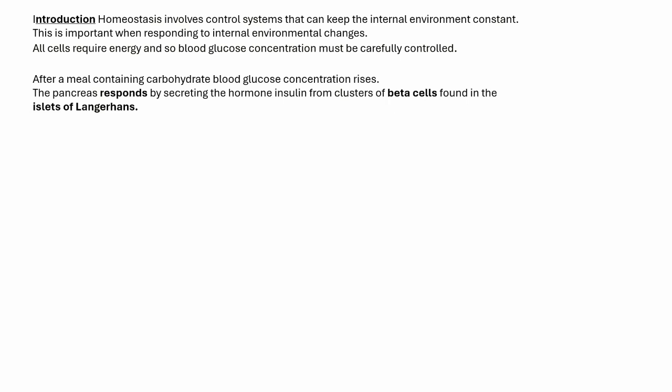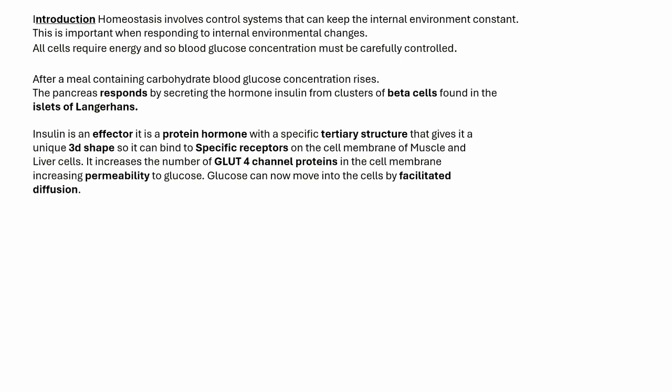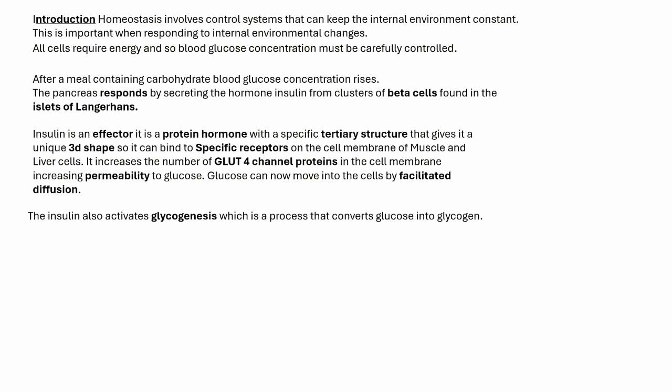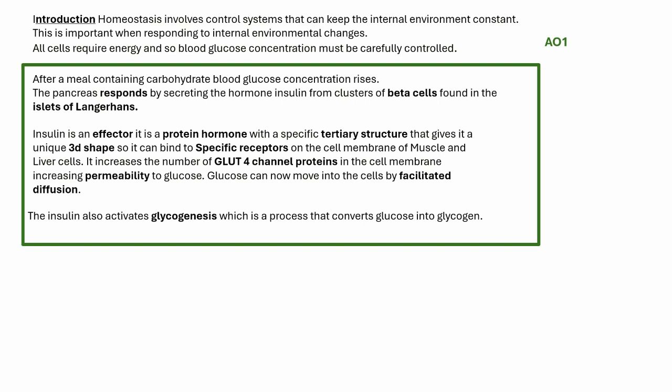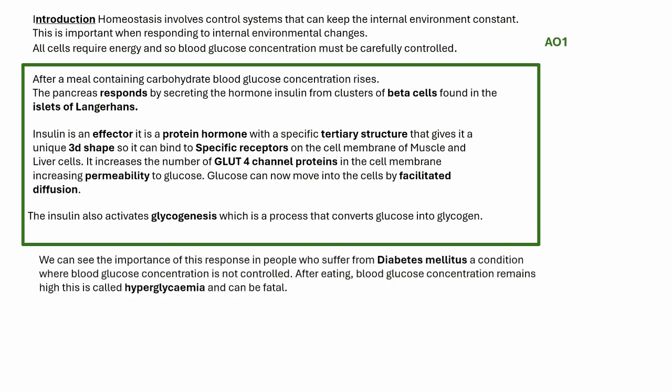After a meal containing carbohydrate, blood glucose concentration rises. The pancreas responds by secreting the hormone insulin from clusters of beta cells found in the islets of Langerhans. Insulin is an effector — it is a protein hormone with a specific tertiary structure giving it a unique 3D shape, so it combines with specific receptors on the cell membrane of muscle and liver cells. It increases the number of GLUT4 channel proteins in the cell membrane, increasing permeability to glucose. Glucose can now move into the cell by facilitated diffusion. Insulin also activates glycogenesis, which converts glucose into glycogen.